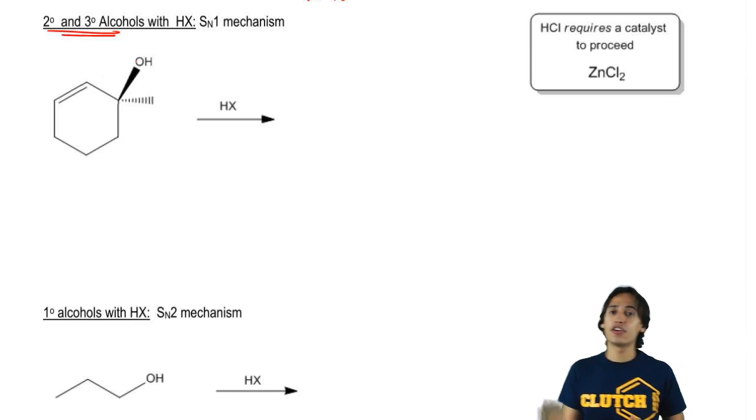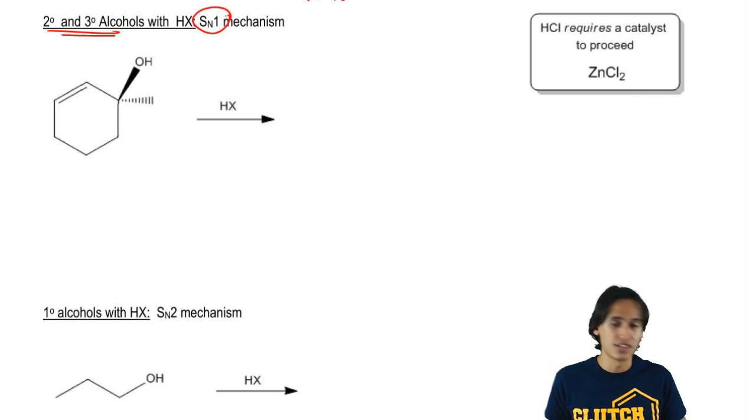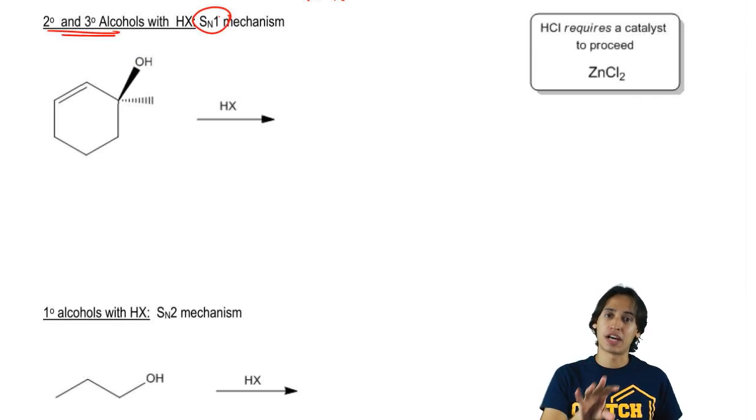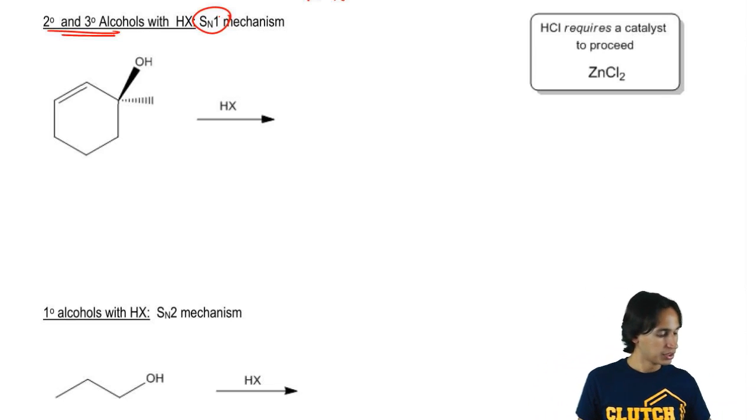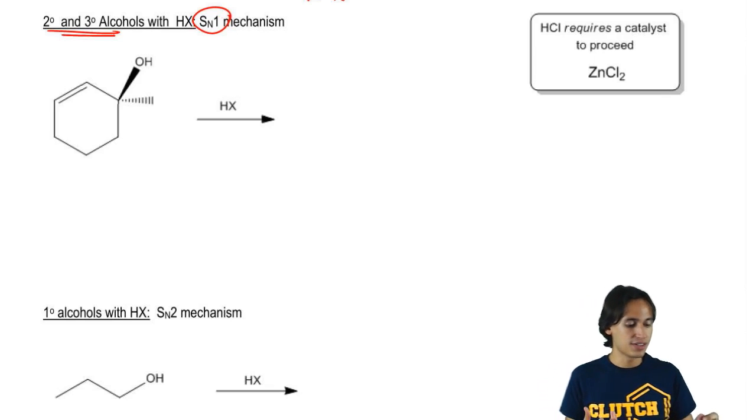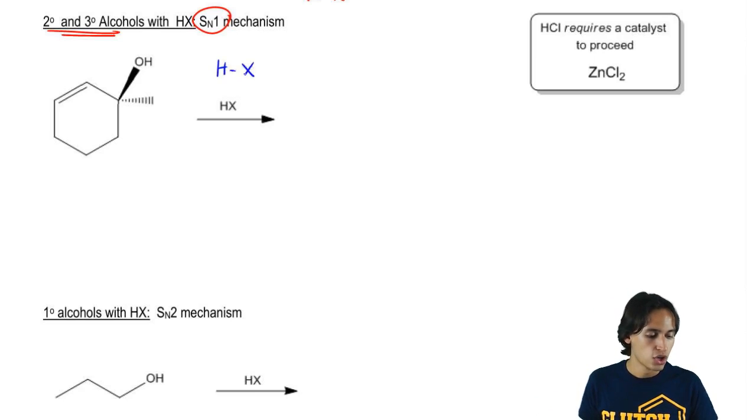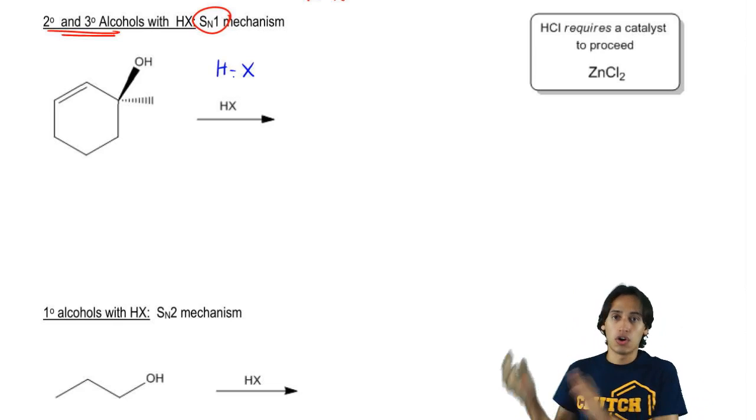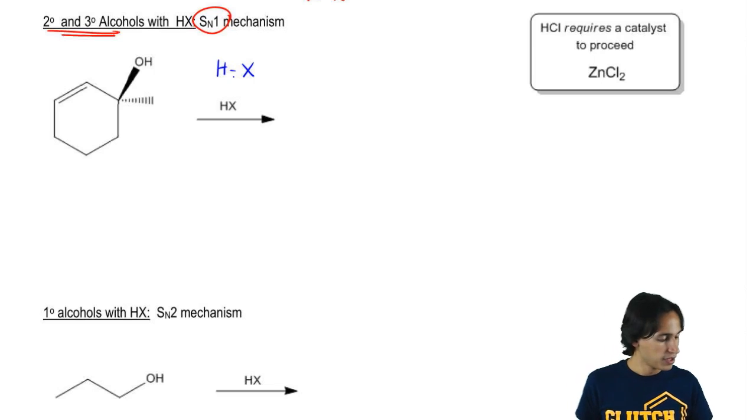So it turns out that secondary and tertiary alcohols proceed with an SN1 mechanism. Remember that SN1 is a two-step mechanism that makes the carbocation first and then it's nucleophilically attacked. So let's go ahead and kind of figure out what's going to happen. In the first step, what I'm going to do is I'm going to protonate my alcohol with my strong acid, HX. We're always going to use HX, a strong acid, to turn alcohol into a good leaving group. And let's just say that the X stands for Br.